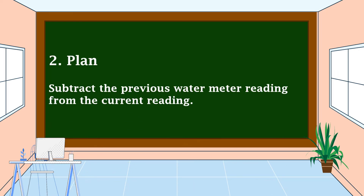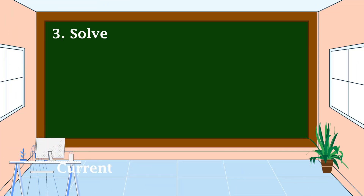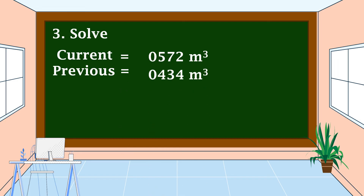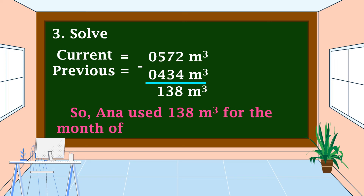We make a plan and carry it out: subtract the previous water meter reading from the current reading. The current reading is 572 cubic meters and the previous reading is 434 cubic meters. Subtracting gives 138 cubic meters. So Anna used 138 cubic meters of water for the month of March.